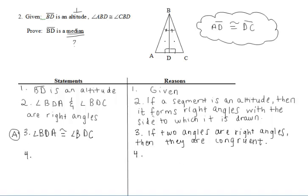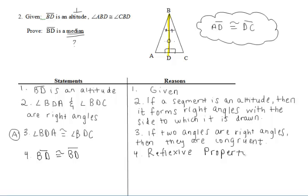That gives us a pair of congruent angles within the triangles. We should also notice that the two triangles share side BD. So we can use the reflexive property on BD and say that segment BD is congruent to segment BD by the reflexive property. That gives us a pair of congruent sides within the triangles. And since we were already given those congruent angles, we can say that the two triangles are congruent by angle, side, angle.